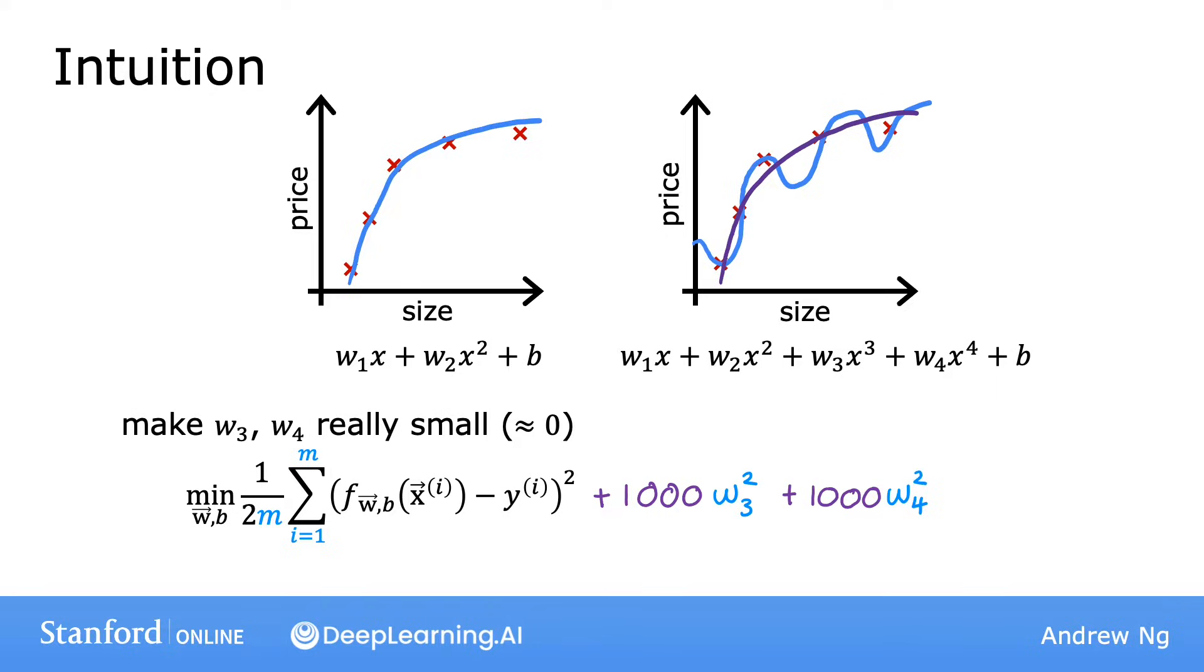And here I'm just choosing 1000 because it's a big number, but any other really large number would be okay. So with this modified cost function, you'd in effect be penalizing the model if w3 and w4 are large. Because if you want to minimize this function, the only way to make this new cost function small is if w3 and w4 are both small.